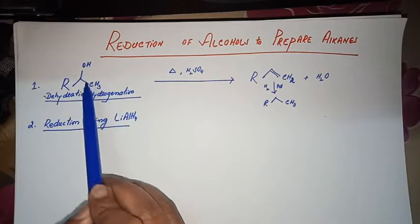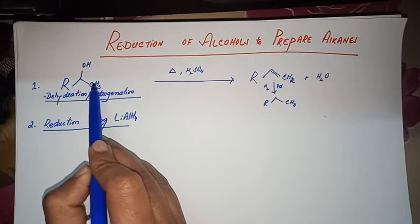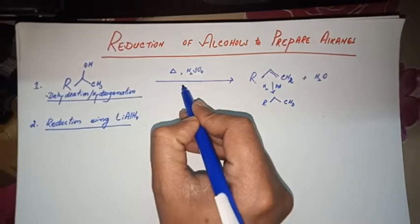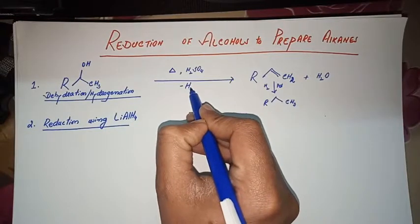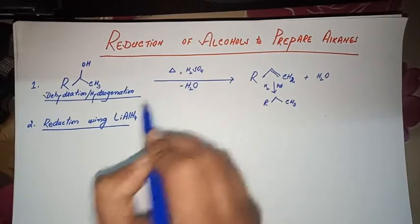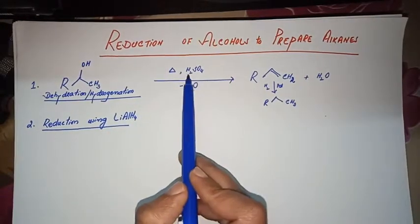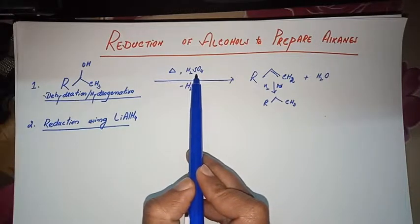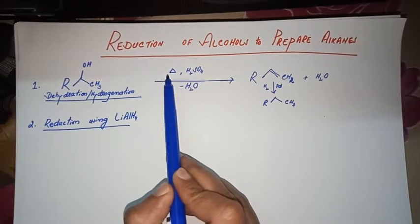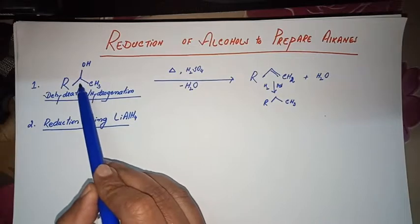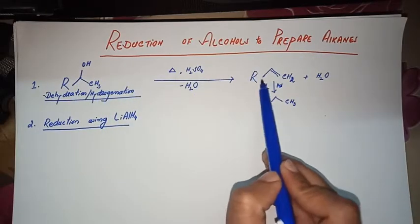This hydroxyl group and one of the hydrogen atoms here, so that our water molecule is removed. That can be done in the presence of a strong acid like H2SO4 and heat, so that we shall get an alkene.